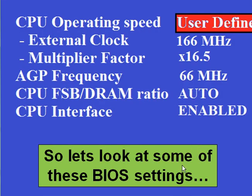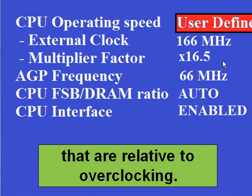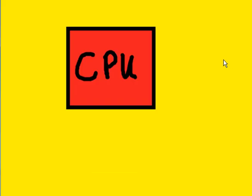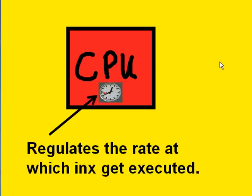So let's look at some of these BIOS settings — the ones that are relative to overclocking. Here's the CPU, and here's an internal clock, internal to the CPU. That internal clock regulates the rate at which instructions get executed — that's the purpose of this internal clock.